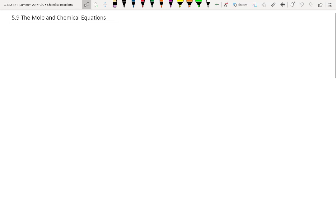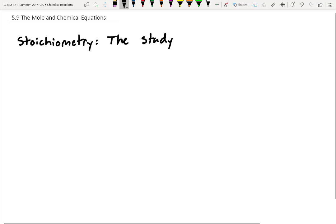All right, this next section is all about the mole and chemical equations. We're going to study something called stoichiometry, S-T-O-I-C-H-I-O-M-E-T-R-Y. This is a fancy word for the study of mass relationships or mole relationships in a chemical reaction.